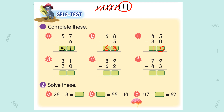For D: 31 minus 20. 1 minus 0 becomes 1. 3 minus 2 becomes 1. So your answer is 11.